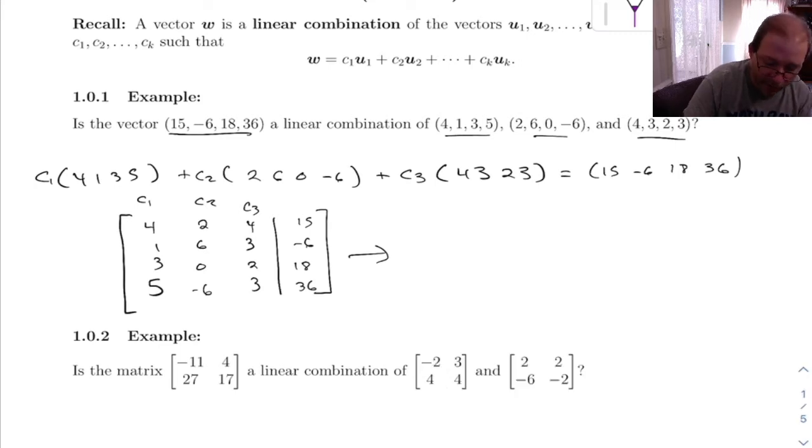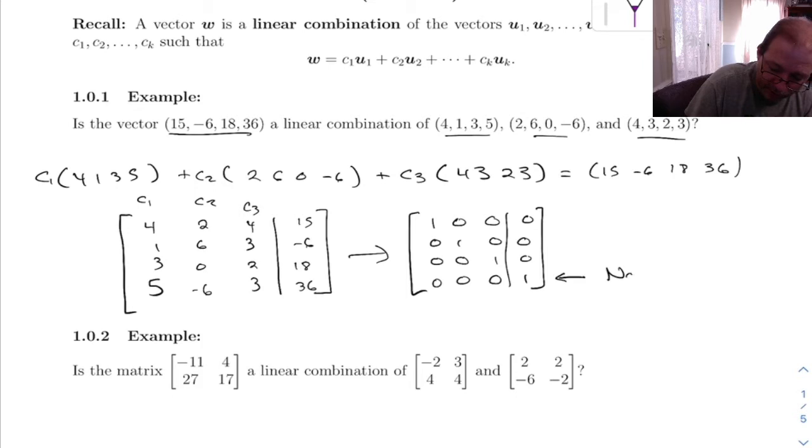This line right here tells you there's no solution. What that means is there's no set of C1, C2, and C3. There's no values for those that make this a linear combination. And therefore, the answer is no, it's not.